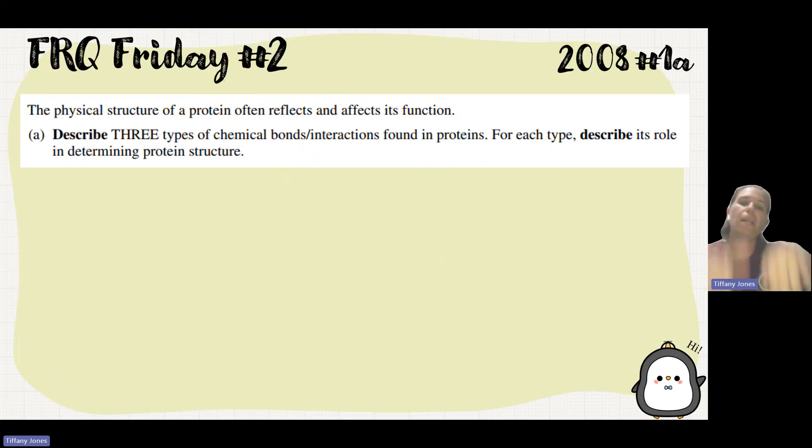Now we'll look at protein structure from 2008. They want to talk about the three types of bonds in proteins. As a quick refresher, we have four different structures. Primary structure is your string of amino acids with peptide bonds. Secondary structure has the alpha helix or beta pleated sheet with hydrogen bonding between the backbone. Tertiary structure is the final three-dimensional structure with one polypeptide, with R groups binding.